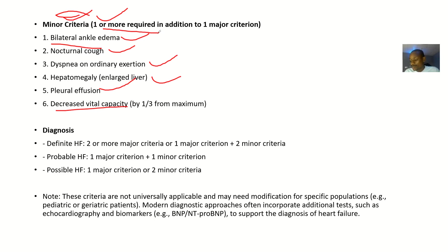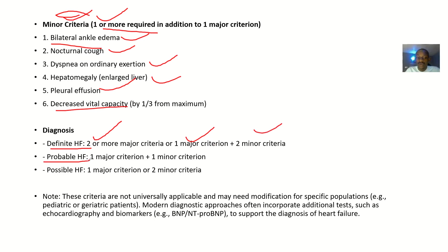For diagnosis: definite heart failure is when the person has two or more major criterias plus two minor criterias. Probable heart failure — where you suspect it — is when the person has just one major criteria and one minor criteria, meaning the person is progressing towards heart failure.